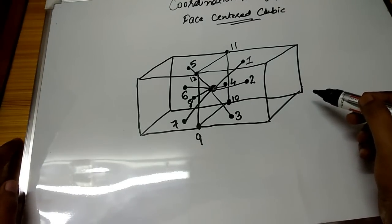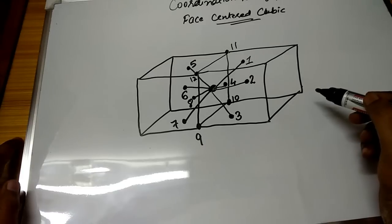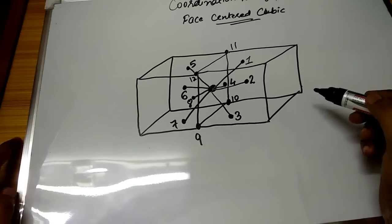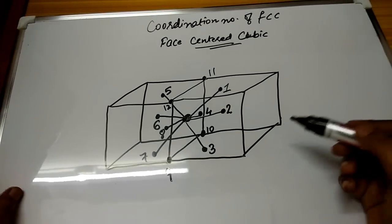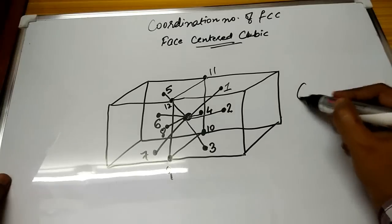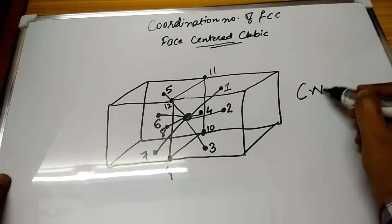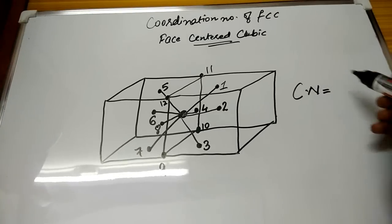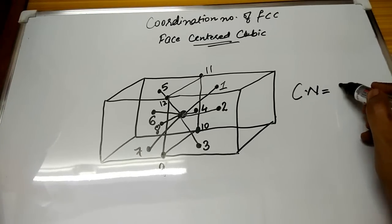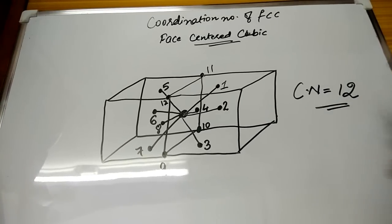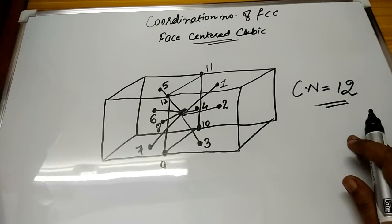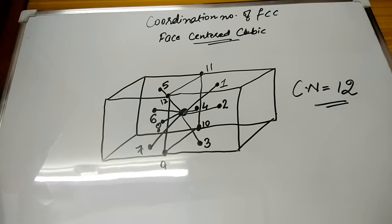So you can easily see that the central atom of this face-centered cubic is surrounded by twelve other atoms. Therefore, the coordination number in FCC is twelve. Thank you for watching the video.